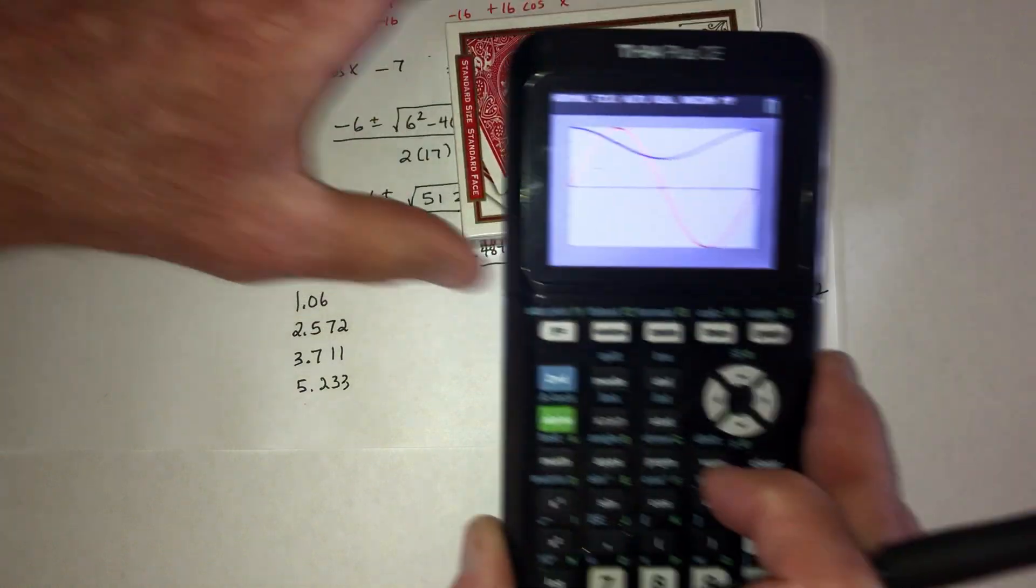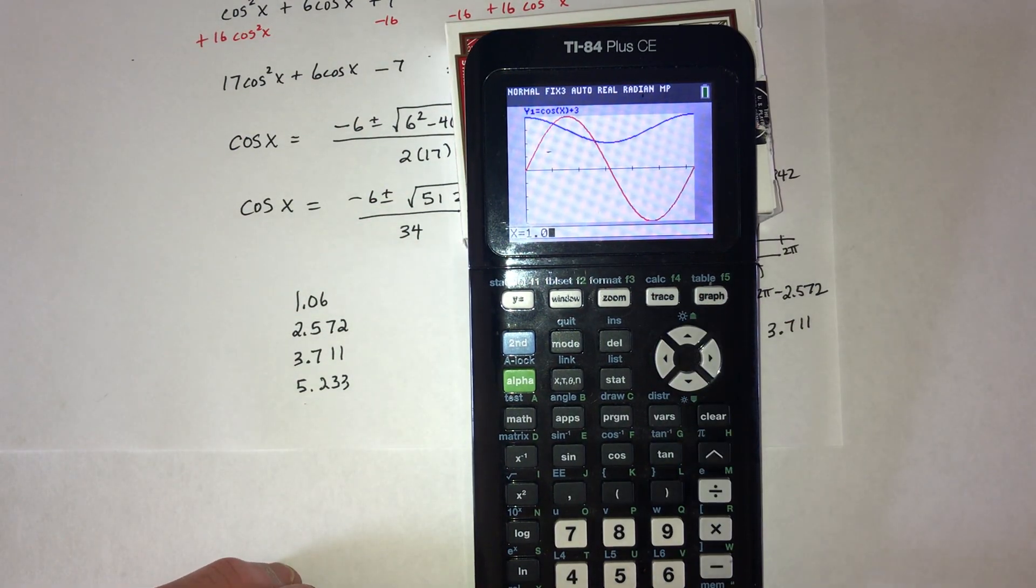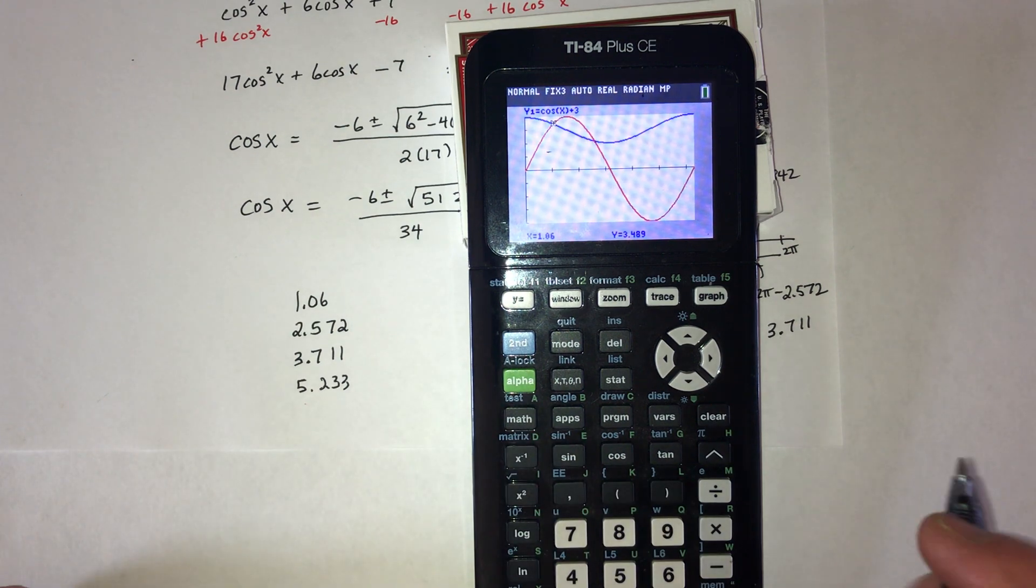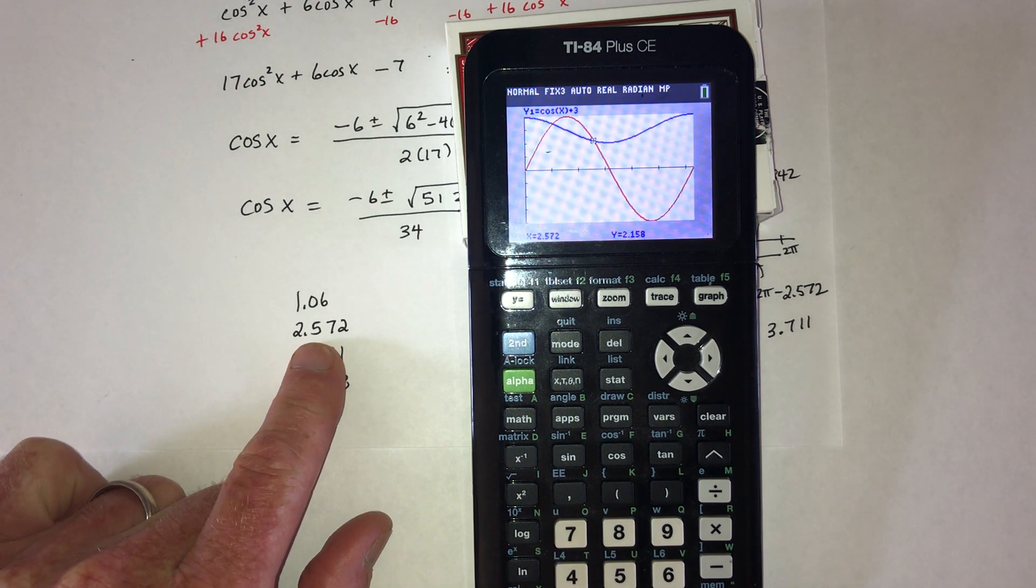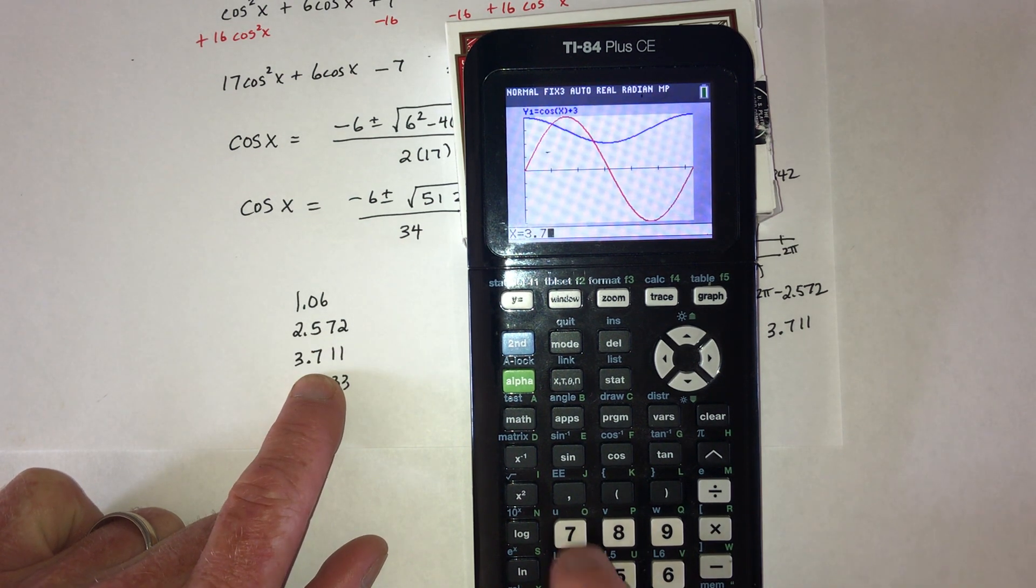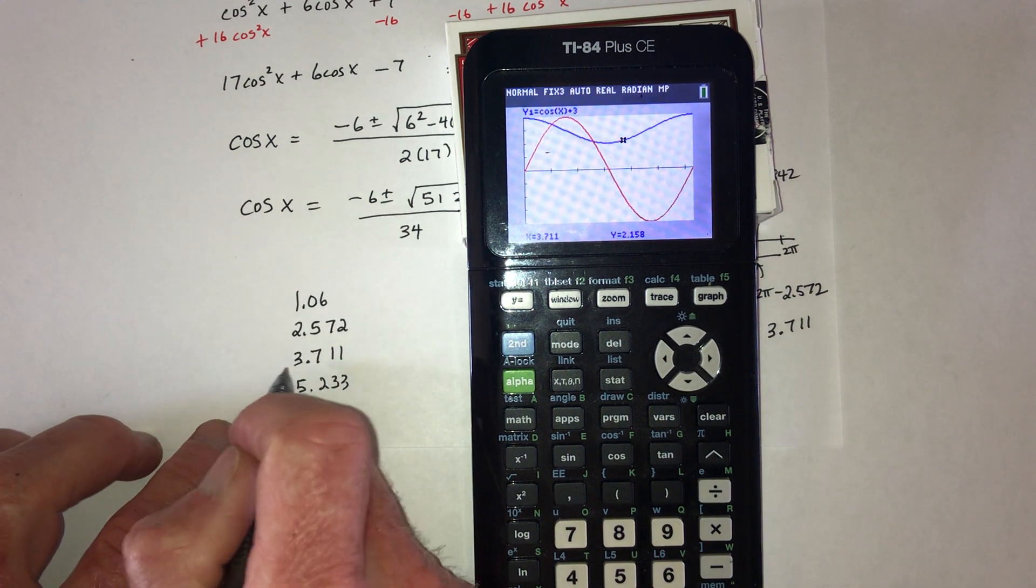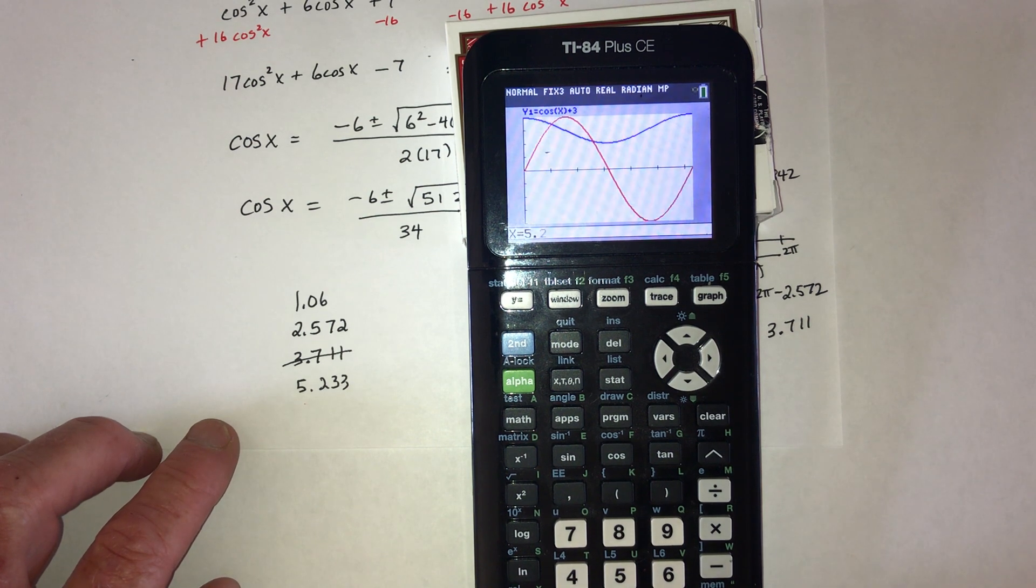So, which answers do we keep and which answers do we throw away? So, trace. What about 1.06? Yes, that one is a keeper. What about 2.572? Yep, that's a keeper. 3.711? No, they don't intersect there. Goodbye, 3.711. And 5.233? Nope, they don't intersect there.